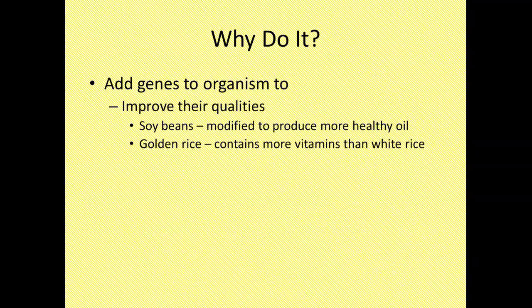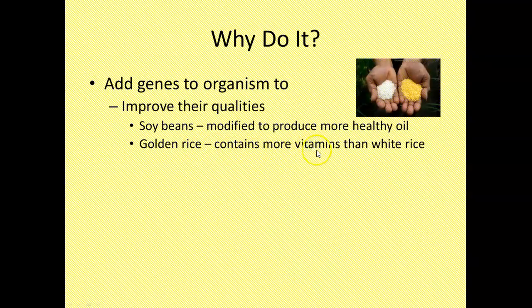Golden rice. It's actually rice that contains more vitamins. They put genes into the rice plants that produces rice that has more vitamins than white rice, especially vitamin A. So there's your regular rice, there's your golden rice, and that has more vitamins because it's been genetically modified.